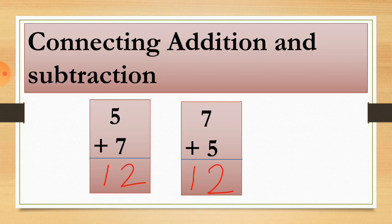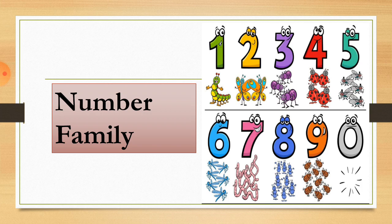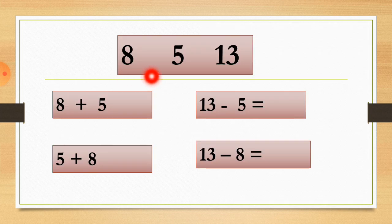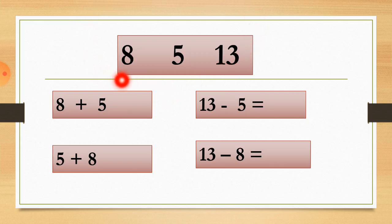So which is the number family? A number family exists when two digits added together give a total. For example, take 8 and 5. 8 plus 5 equals 13. These three numbers — 8, 5, and 13 — form a family. Whenever two digits are counted together and give a sum, those three numbers form a family. Just keep this in mind.